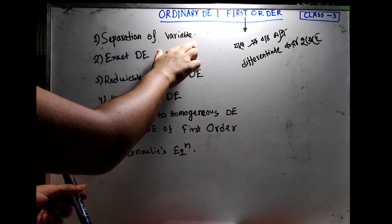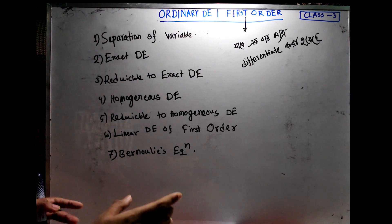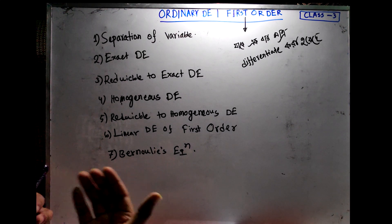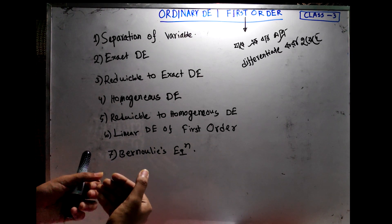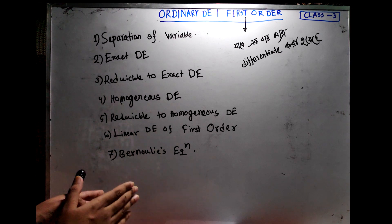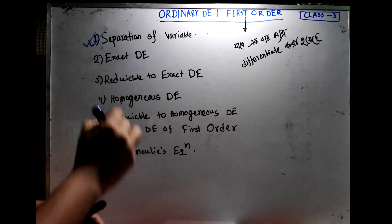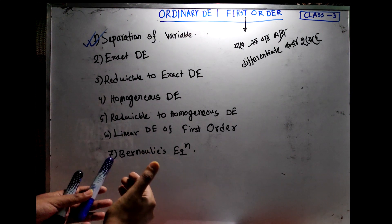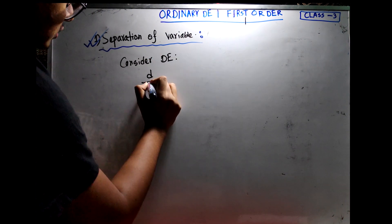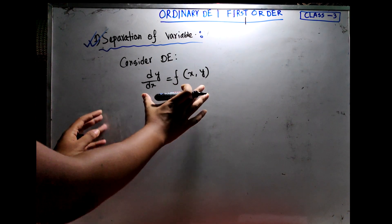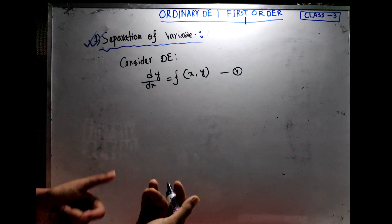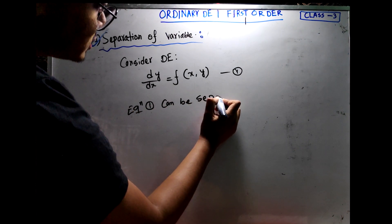We will start with the separation of variable method for first-order differential equations. Consider a differential equation dy/dx = f(x, y), where x and y are variables. We will see how this equation can be solved using the separation of variable method — specifically when the equation is separable.